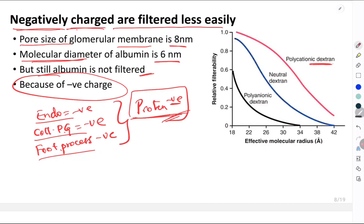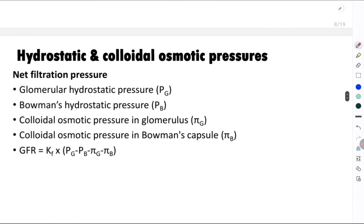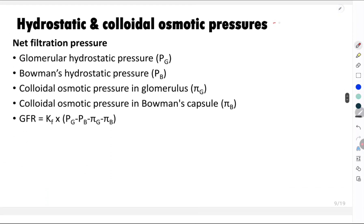A graph in Guyton shows three dextrans: polycationic, neutral, and polyanionic. The polyanionic dextran has very low relative filtrability compared to the polycationic dextran. So the charge present on particles is an important factor determining permeability across the glomerular capillary membrane. This concludes our second factor.